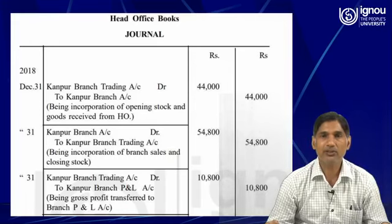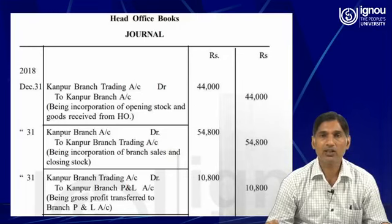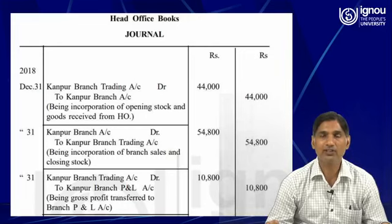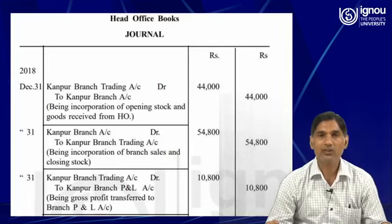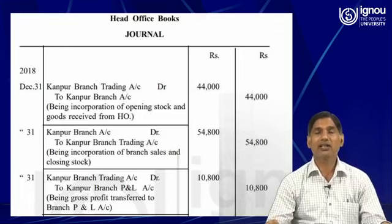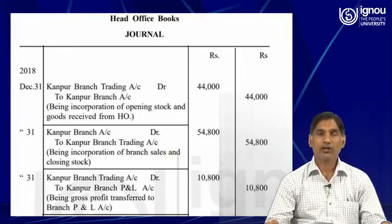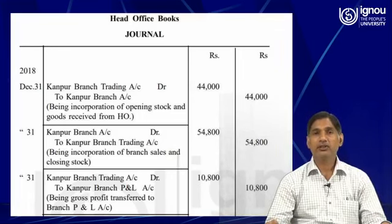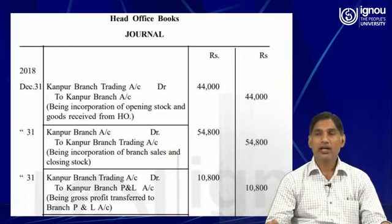This is the difference between the two amounts — one is the amount which was to be recorded in the credit side of the trading account, and the other is the amount which was supposed to be recorded in the debit side of the trading account. This amount is in excess by rupees 10,800; therefore, this is the journal entry for the gross profit in the books of the head office.